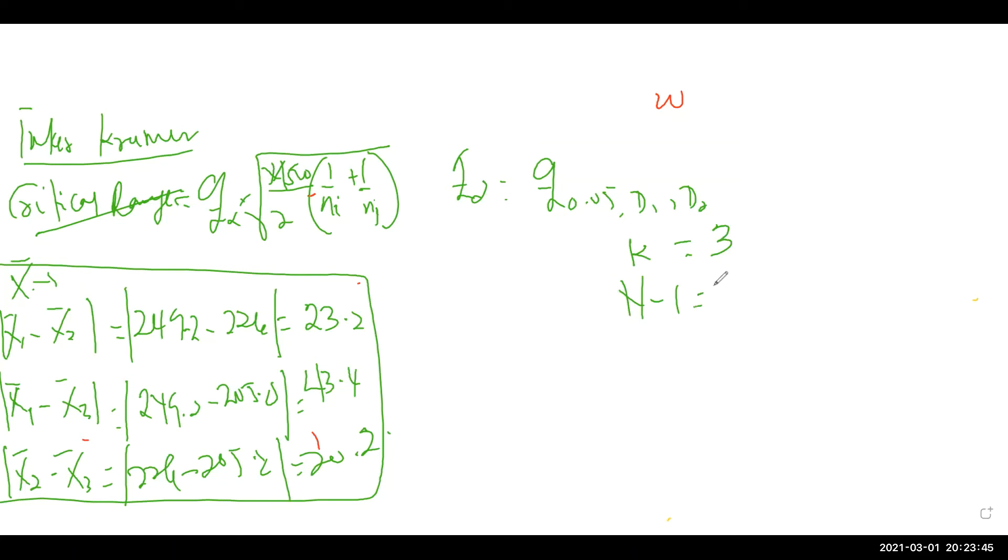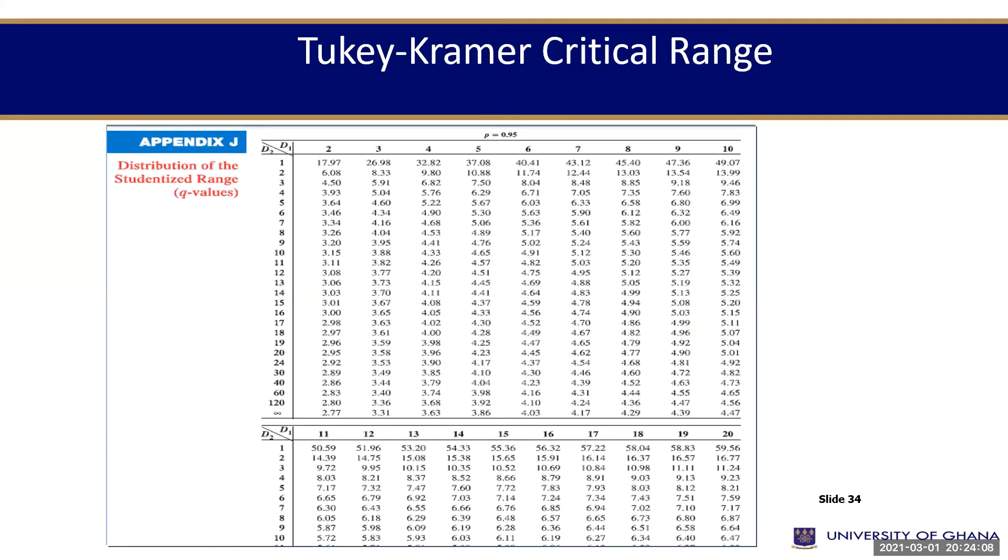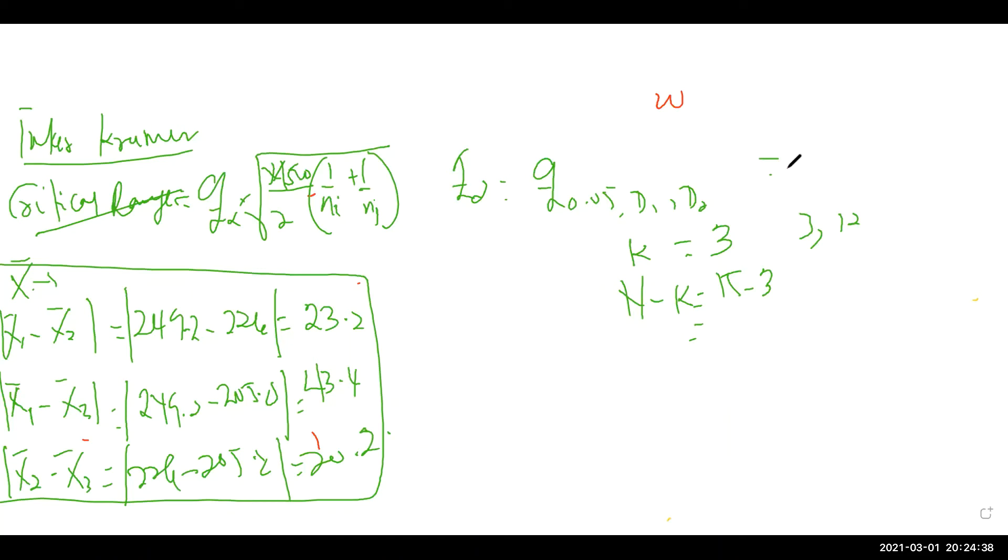K was 3. N-K, sorry, N-K. So we have three and 12. So please let me go to the table. That's the table we have here. So alpha is 0.05, and we have K to be three. Then D2, N minus K is also 12. In this case, by coming vertically down here, horizontally here, that is 3.77. So from the table again, my Q-alpha is equal to 3.77.